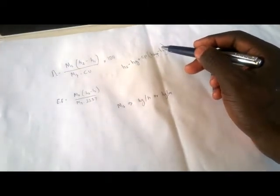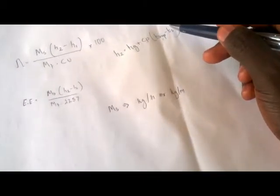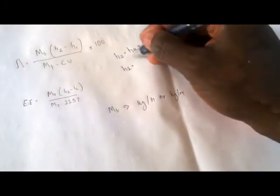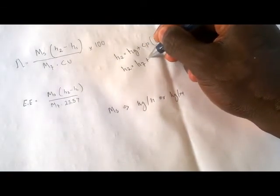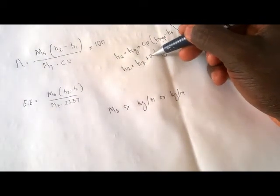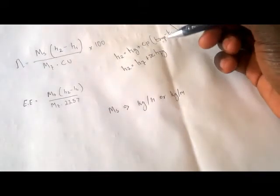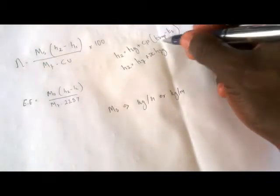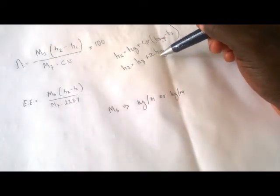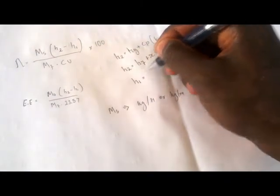The saturated temperature you will find in your steam table. Sometimes if you are given a dry saturated steam, you have to use the formula hf plus x times hfg — that is the liquid enthalpy plus the dryness fraction of the steam multiplied by the enthalpy of evaporation. So h2 depends on whether the steam is superheated, dry saturated, or wet.